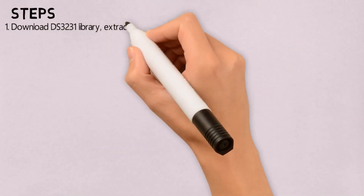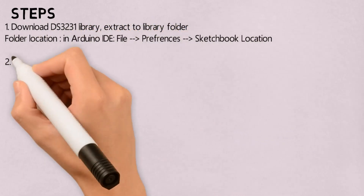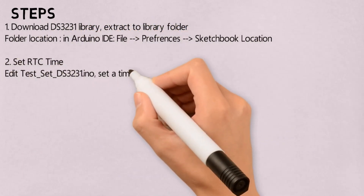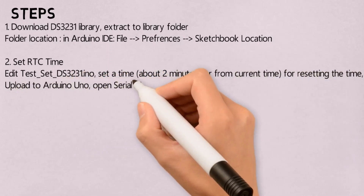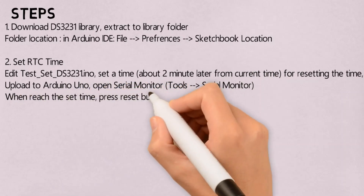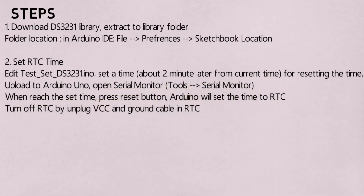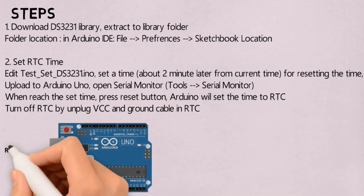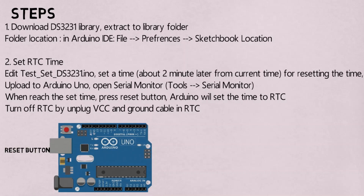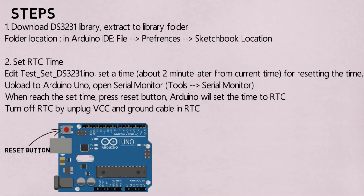Step-by-step to build: Step 1 — download the DS3231 library and extract it to the Arduino IDE library folder. Step 2 — set RTC time by editing the file and uploading it to Arduino. When the set time is reached, press the reset button, then turn off the RTC by unplugging the VCC and ground cable from the RTC. The reset button on Arduino and VCC and ground cable of the RTC device are shown in the pictures.